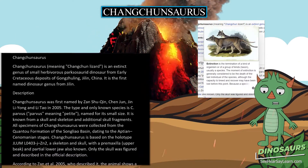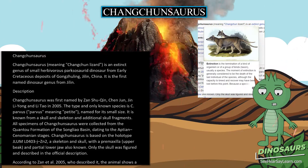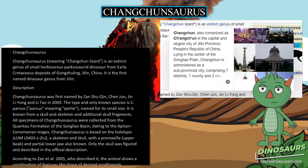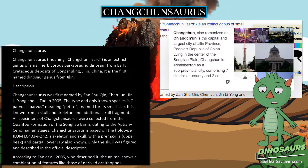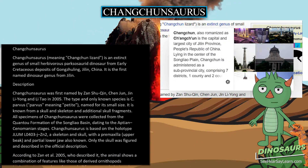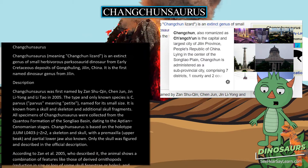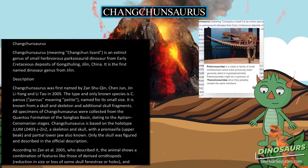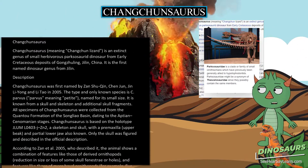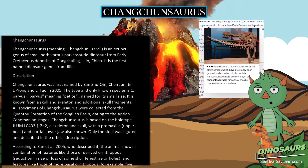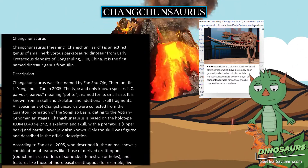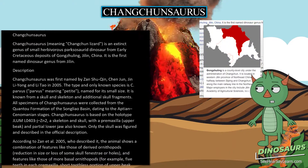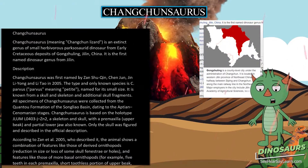Changchunsaurus was first named by Zan Xuqin, Chen Jun, Jin Liuong, and Li Tao in 2005. The type and only known species is C. parvus, parvus meaning petite, named for its small size. It is known from a skull and skeleton and additional skull fragments.